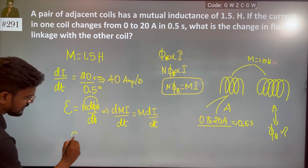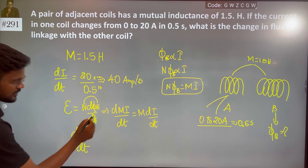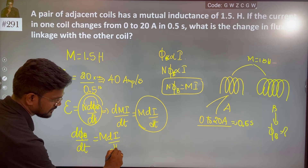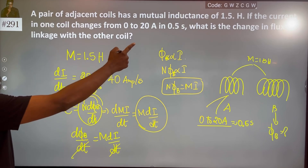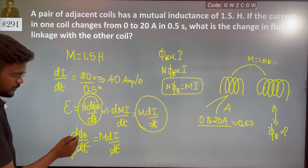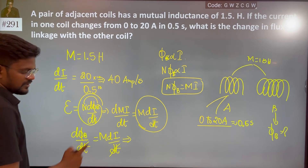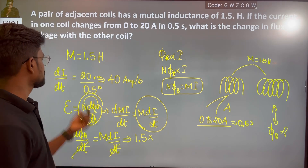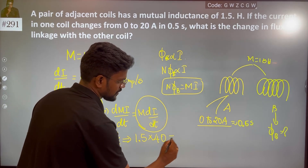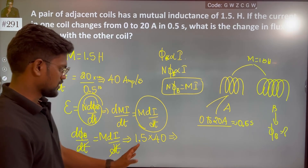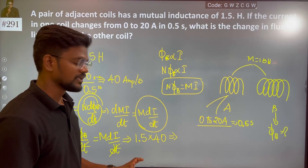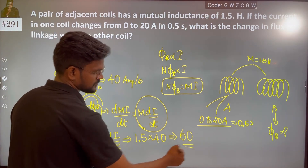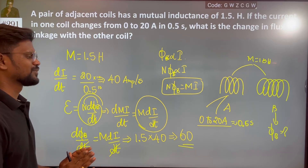We can also say dΦB by dt equals M times di by dt. The change in flux linkage with the other coil dΦ equals M times di, which is mutual inductance 1.5 into change in current 40 Ampere per second, giving a change in flux of 60 Weber.